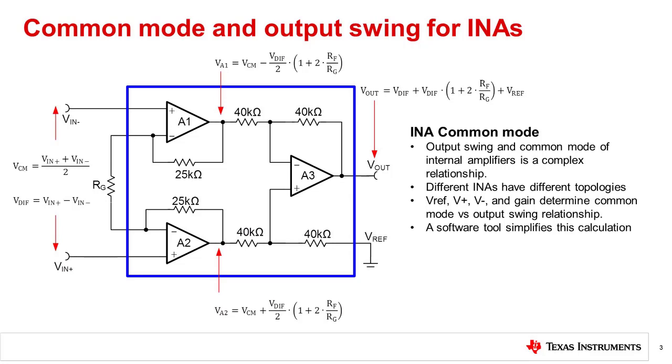These limitations combine into an overall common mode versus output swing limitation for the INA. The output swing limitations are a function of the input common mode, the gain, the power supplies, and the reference input. This relationship is complex and generally cannot be determined with a simple equation or data sheet parameter. In some cases, a data sheet diagram graphing common mode versus output swing limitations.